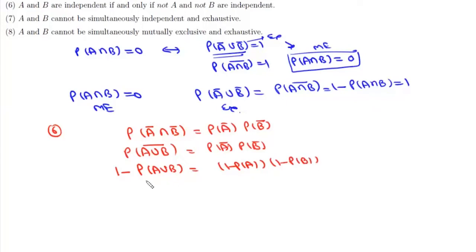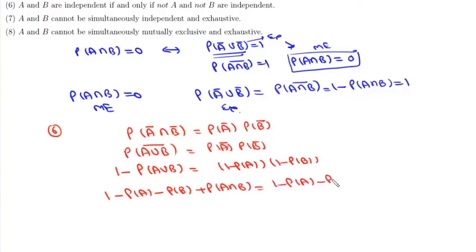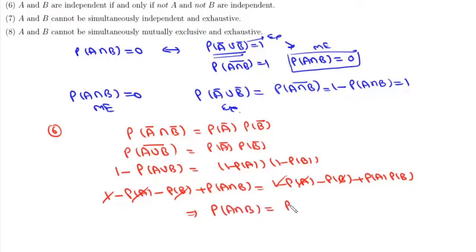Now P(A ∪ B) = P(A) + P(B) − P(A ∩ B), so P(A ∪ B)⁰ = 1 − P(A) − P(B) + P(A ∩ B), and P(A⁰) · P(B⁰) = 1 − P(A) − P(B) + P(A) · P(B). The terms 1 − P(A) − P(B) cancel, giving us P(A ∩ B) = P(A) · P(B). So if A⁰ and B⁰ are independent, then A and B are also independent.